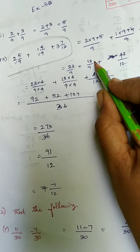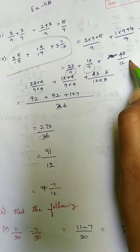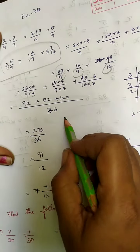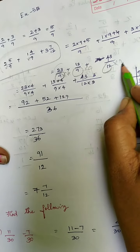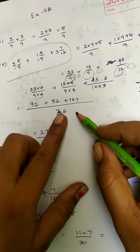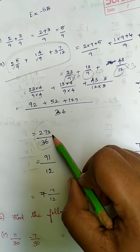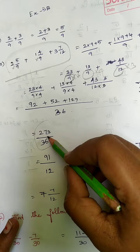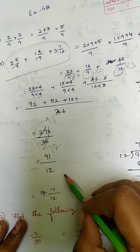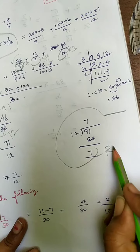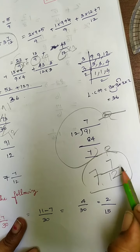Your denominators are 9, 9, and 12. Find the LCM, which is 36. Make all denominators 36: multiply 9 by 4 to get 36, and 12 by 3. Multiply both numerator and denominator accordingly, making the denominators 36. The numerators become 92, 52, and 129, giving 273 divided by 36. Cancelling using the 3 table gives 91 divided by 12. Dividing, the quotient is 7 with a remainder of 7, so the answer is 7 and 7 by 12.